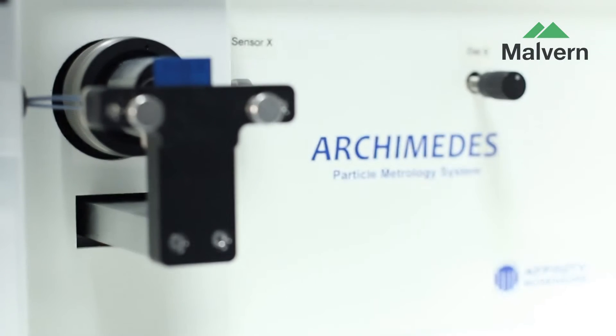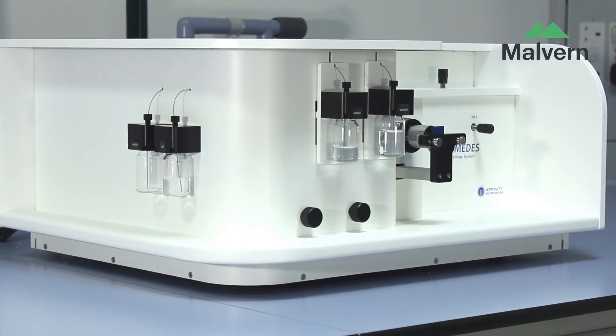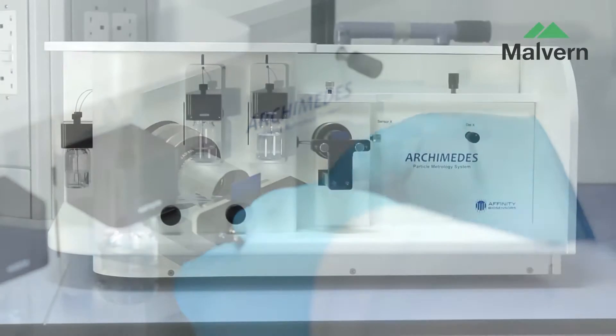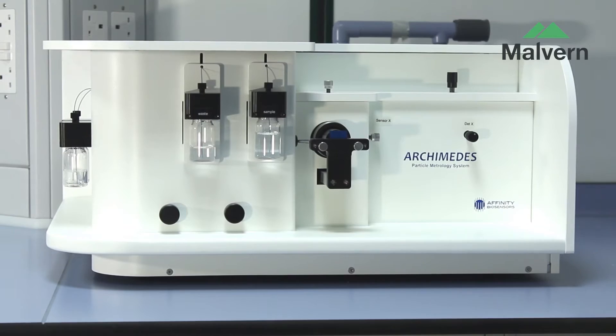Archimedes is a new concept in protein aggregate detection in the sub-visible region using resonant mass measurement to detect, count, and size protein aggregates from around 150 nanometers up to 5 microns in diameter.